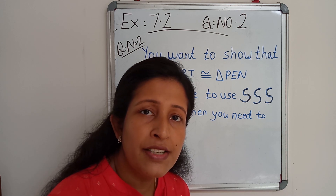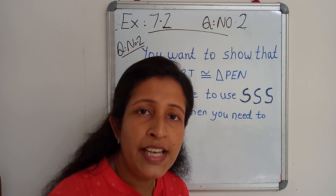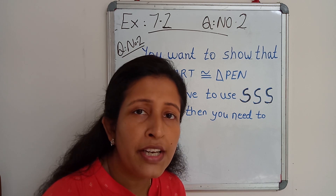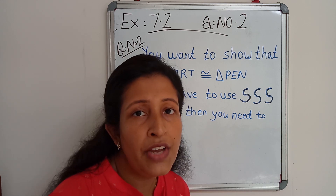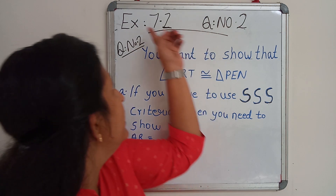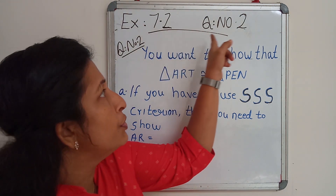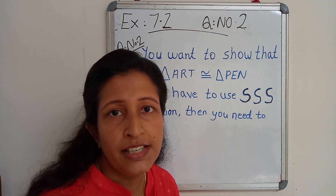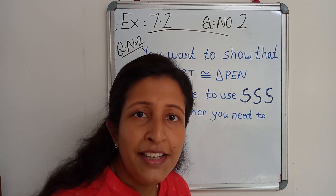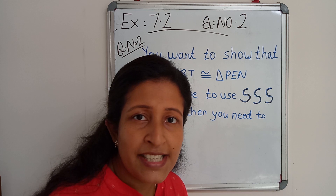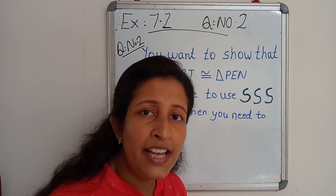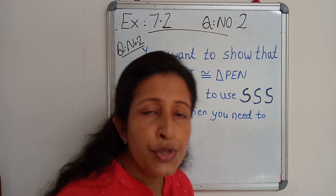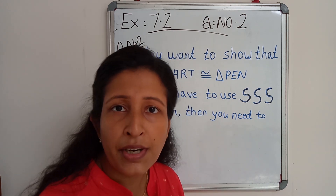Do you remember the previous class? We were discussing the criteria for congruency of triangles. We discussed 4 criteria, and we are doing exercise 7.2. Today we will deal with question number 2 of the same exercise. The 4 criteria are: SSS criteria, ASA criteria, SAS criteria, and the last one is RHS criteria.